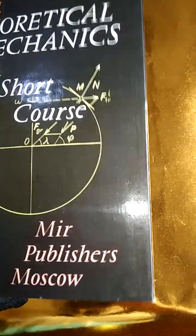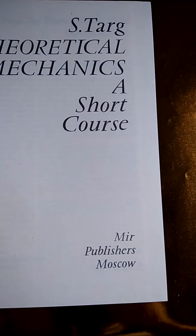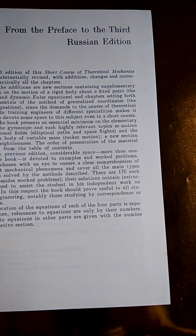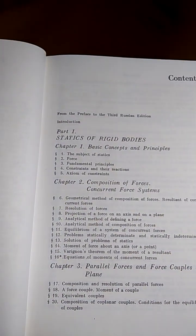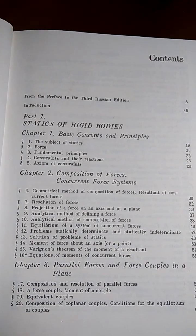So this is a beautiful book, this looks like an unused book from my collection. This book was published in 1962, that's the first edition, but this is the second edition, second printing 1980. So part one is statics of rigid bodies.